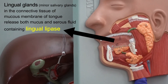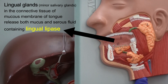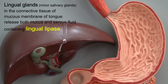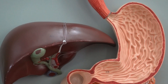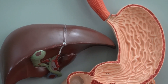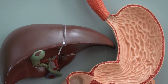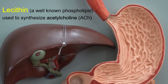From lingual glands we receive an enzyme named lingual lipase. The term lipase tells us that this enzyme is capable of breaking down lipid. The most plentiful lipid in our diet is triglyceride, which is a molecule made of a backbone named glycerol and three fatty acids. We also have other types of lipids in our diet — for example, phospholipid is another lipid that lipase enzymes can break down. One well-known phospholipid in our diet is lecithin, which is used to synthesize neurotransmitters such as acetylcholine.